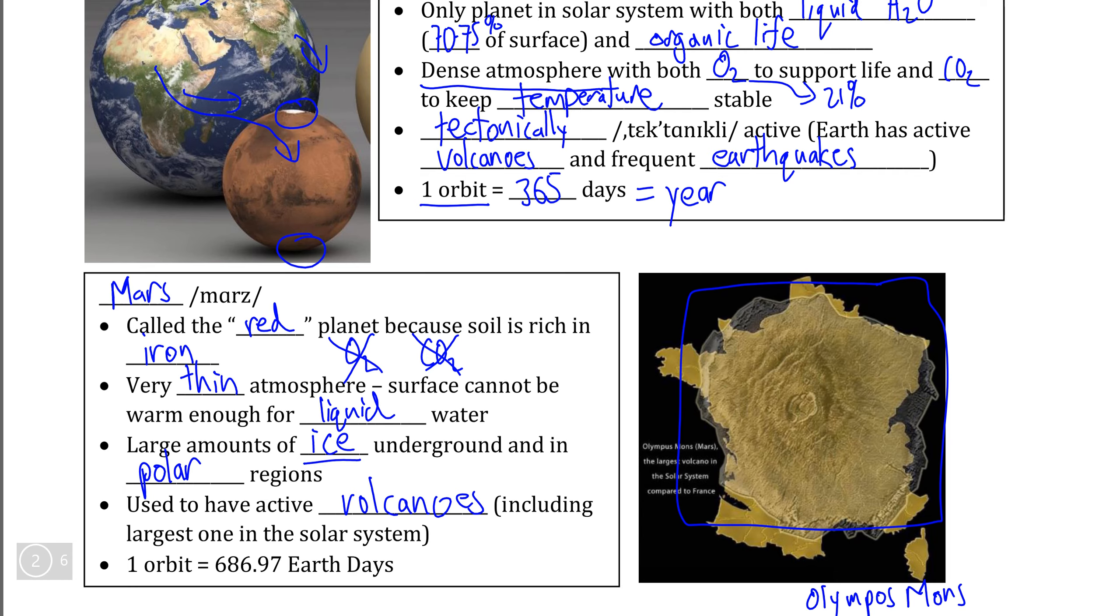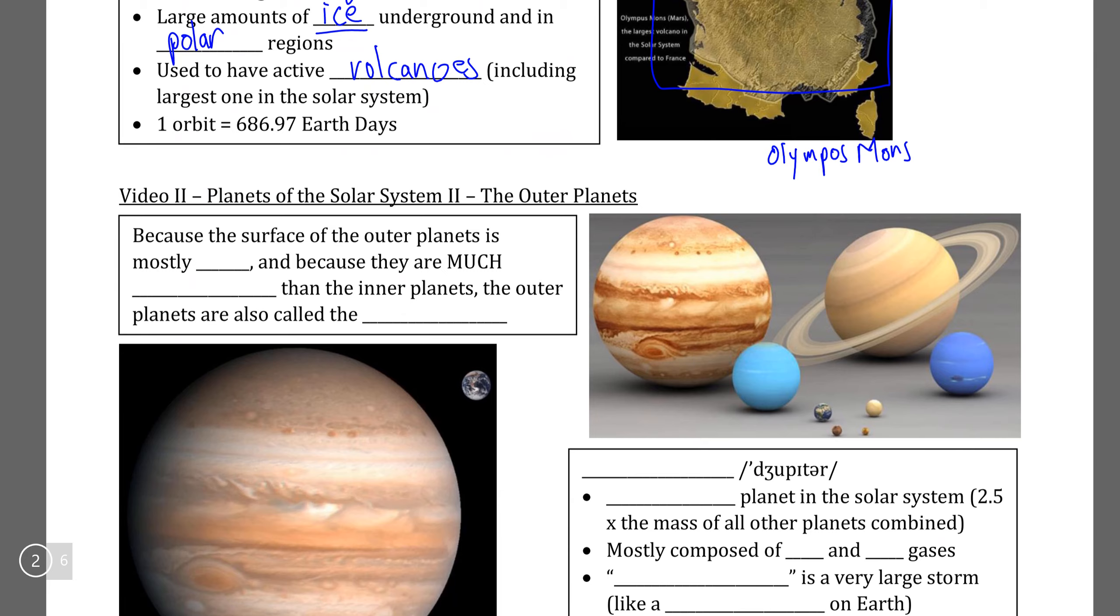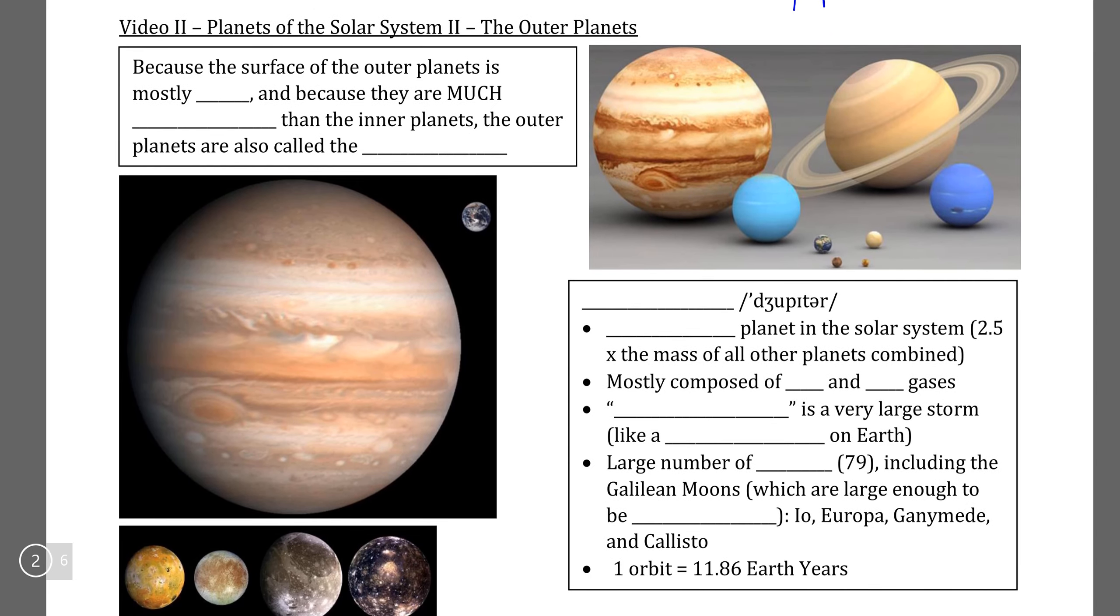Now that we've looked at the four examples and interesting features of the inner planets, the next video will focus on the planets farthest away from the sun, the outer planets.